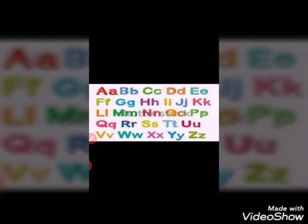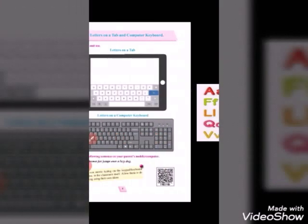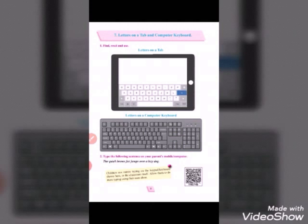Now children, we can use these alphabets to make words and write them in the notebook. But during this COVID-19 pandemic situation, we cannot go to school. We all use our computer, laptop, tab, and mobile phone to study. We should know how to write with the help of the computer or mobile. It is necessary in today's fast-changing world to type and write. So children, in today's topic, we will learn to use the letters on the tab or computer keyboard. This is page number 8, topic number 7: letters on the tab and computer keyboard.